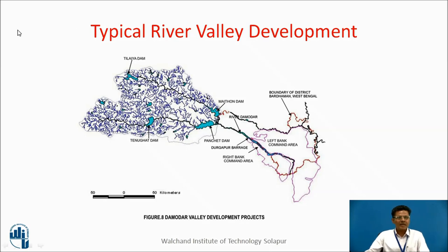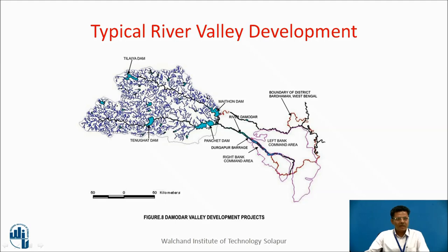This is a typical river valley development plan for Damodar. This is the catchment area or watershed area of Damodar river. Dams are constructed in this valley at certain locations such that every dam gets a certain catchment and at the same time a good reservoir is formed. When we construct a barrier across the river and a pool of water is formed, that is called a reservoir.